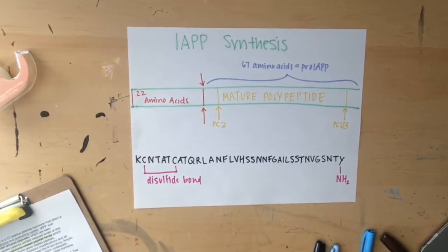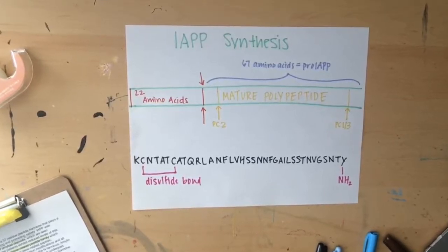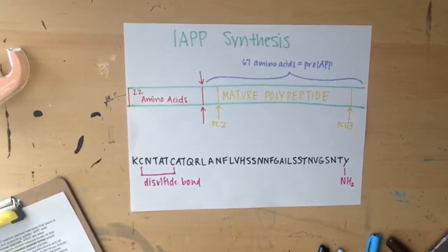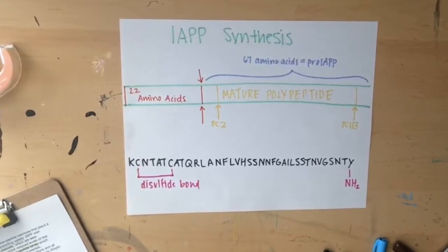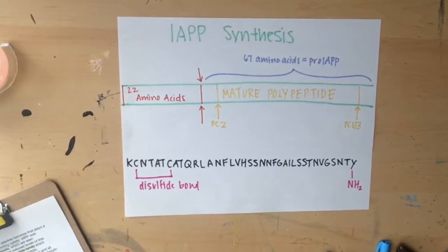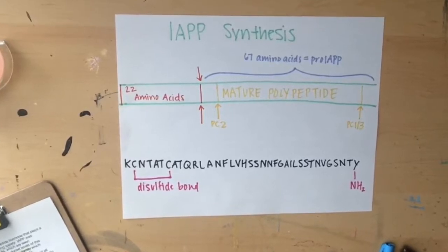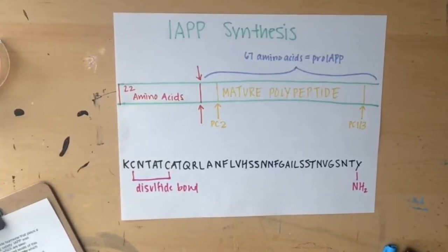The dibasic lysine-arginine pair at the C-terminus is removed by carboxypeptidase, and the glycine acts as the nitrogen donor for amidation of the C-terminus. In the mature peptide, a disulfide bond is formed between amino acids, residues 2 and 7.